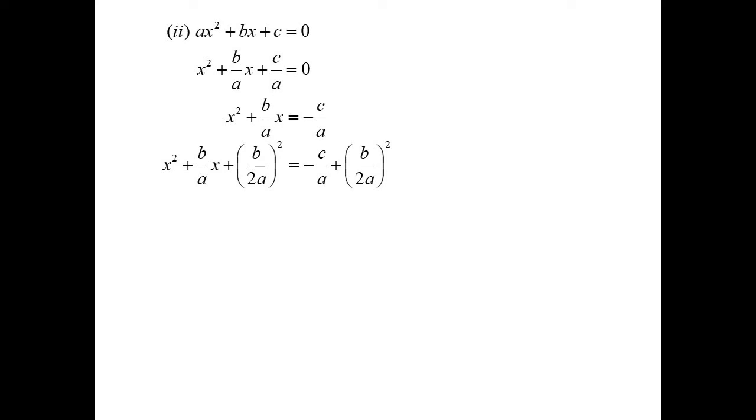So half the coefficient, well that's b on a. Half of that, b on 2a, and we're going to square it. So x plus b on 2a squared is equal to negative c on a plus b squared on 4a squared.